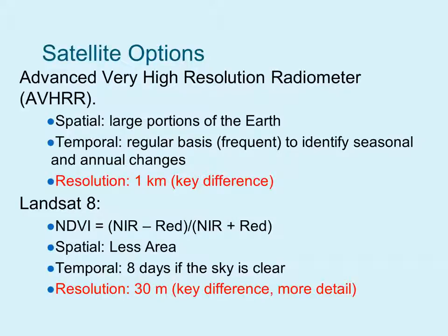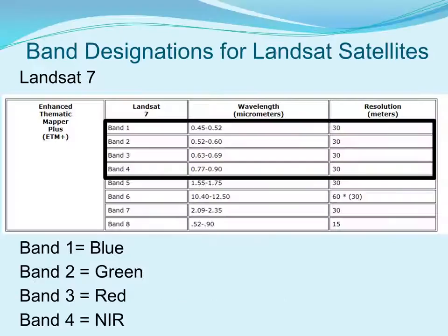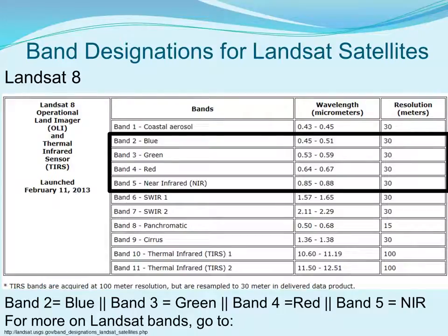Of course there are other satellite options. If you are interested in Landsat data from quite a few years ago, you may be using other Landsat satellites such as Landsat 7. The band designations for Landsat 7 are: band 1 blue, band 2 green, band 3 red, and band 4 near infrared. Landsat 8 has different bands: band 2 is blue, band 3 is green, band 4 is red, and band 5 is near infrared.